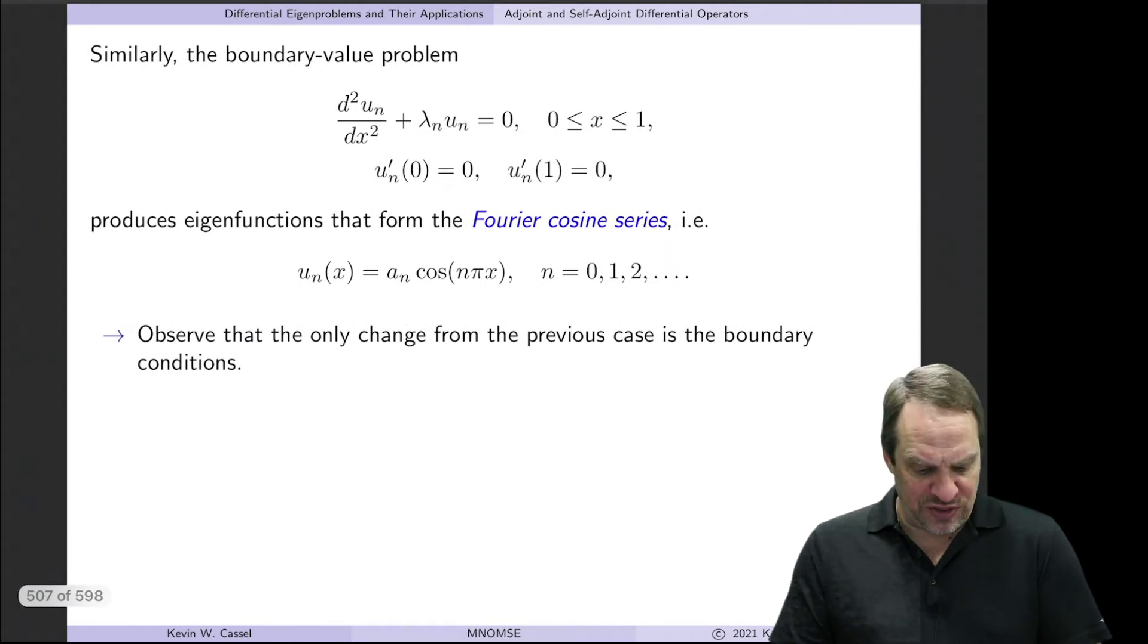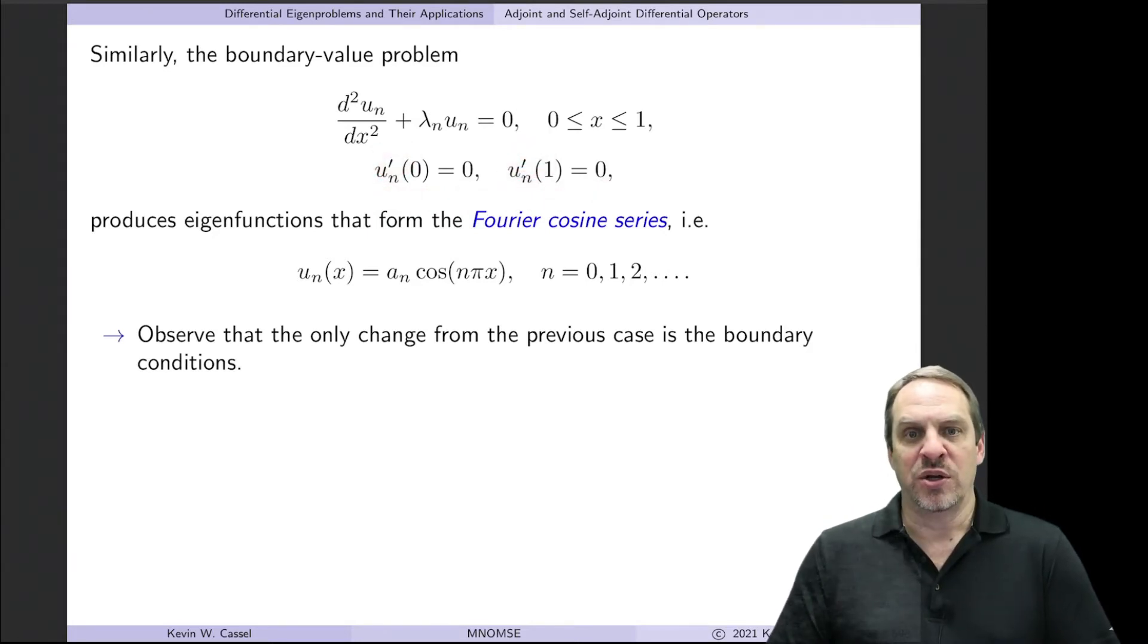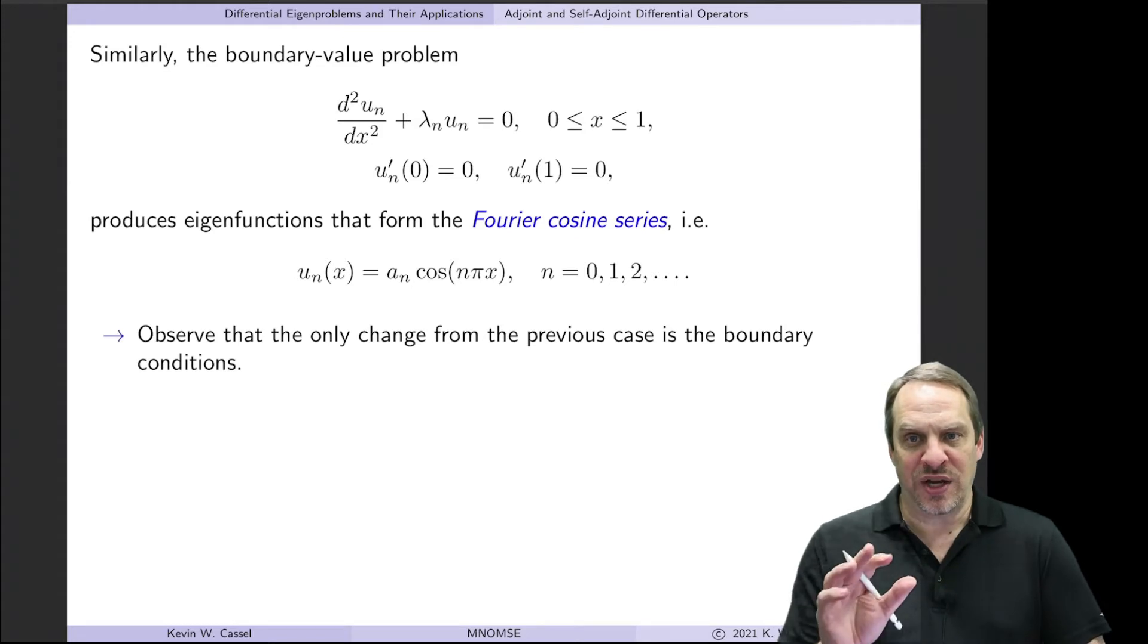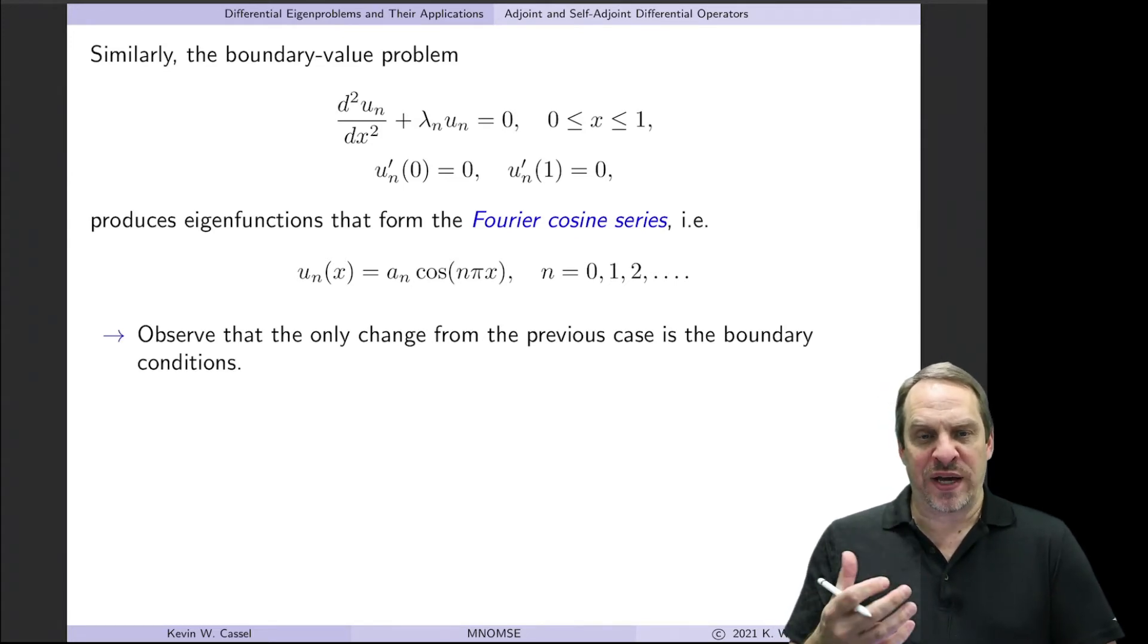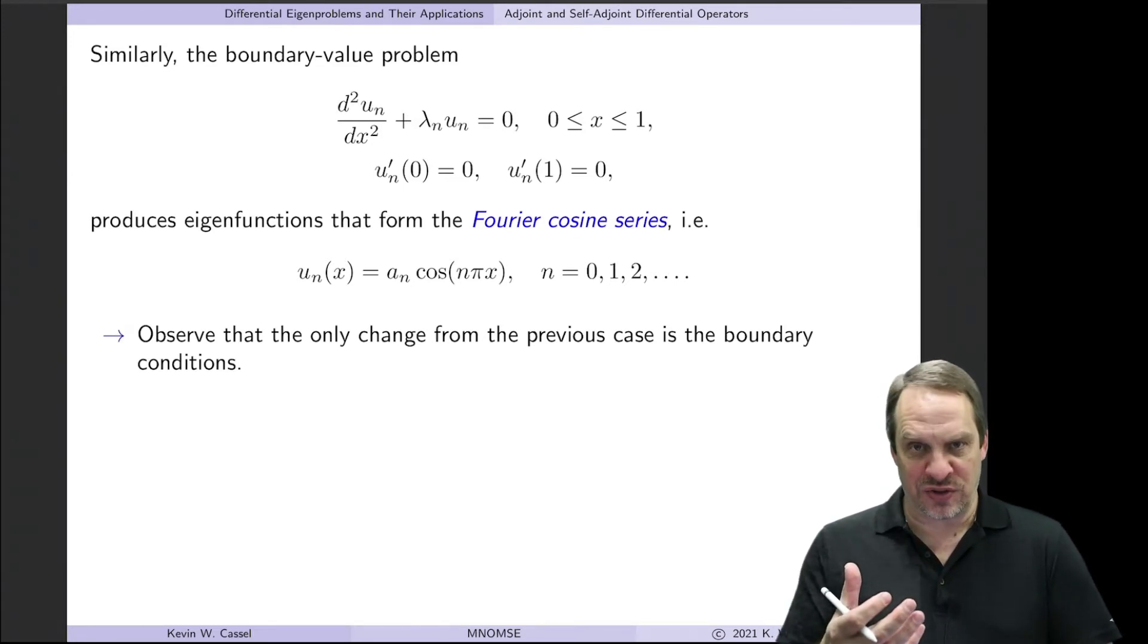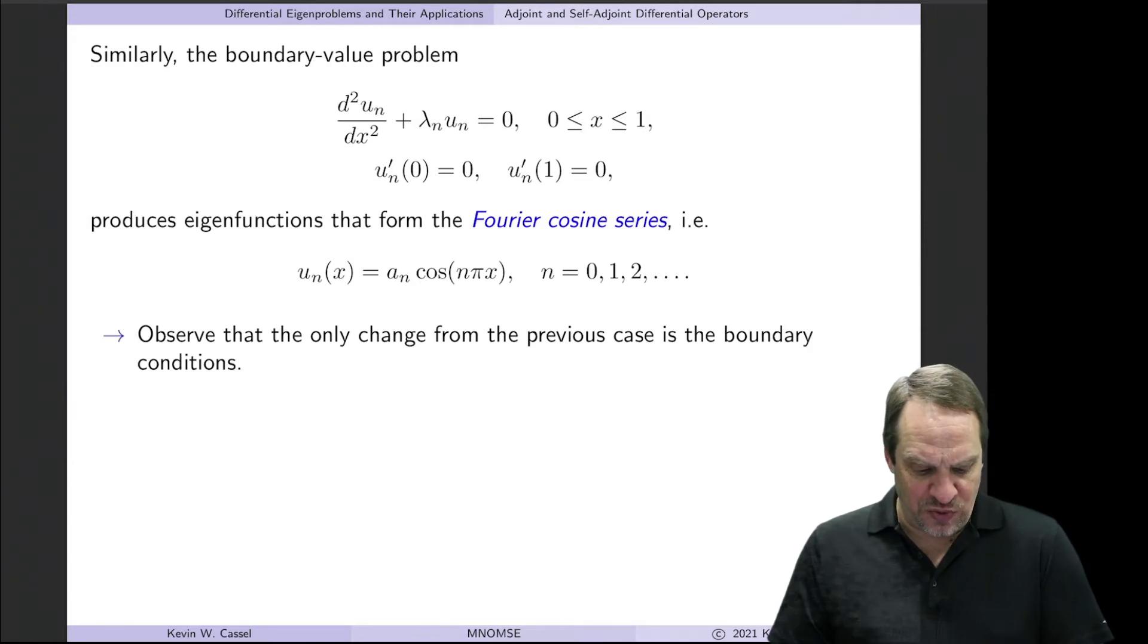If we make one simple change, so the same equation, same differential eigenproblem, but simply change the boundary conditions, so rather than u at zero being zero, u at one being zero, it's going to be u prime at zero, and u prime at one, both being zero. So that simple change requires you to go back, reevaluate the eigenfunctions, and instead of getting a Fourier sine series, you'll get a Fourier cosine series. So it'll be a constant times cosine of n pi x in that case.